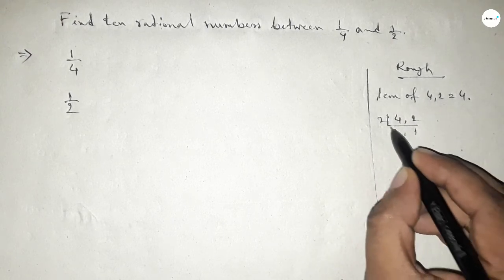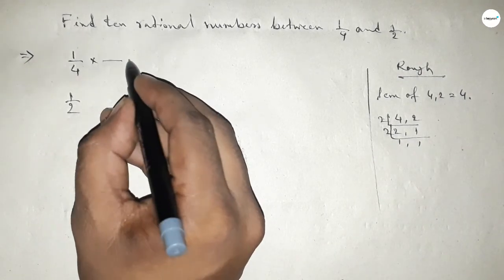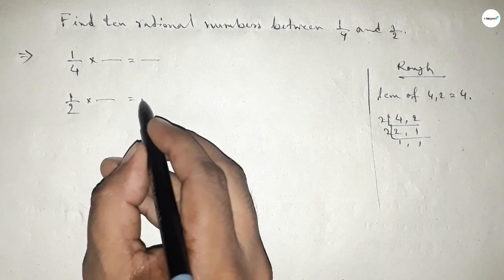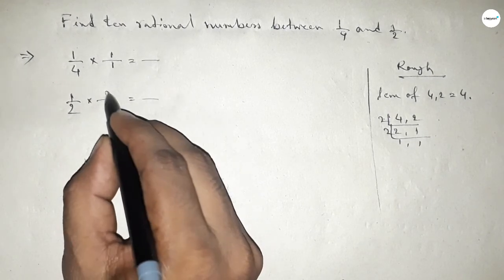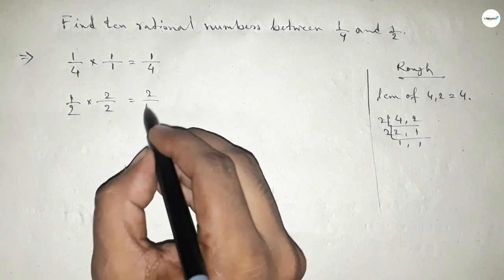So now what should be multiplying here? If you put 1 here and 2 here, this is 1/4 and this is 2/4.